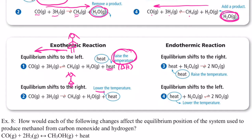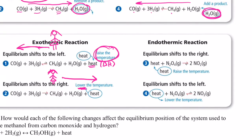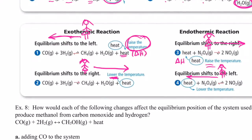To shift an exothermic reaction to the right, we lower the temperature. When it's cold, the little girl shifts towards the heat — so lowering temperature on an exothermic reaction shifts it right. For endothermic reactions, heat is on the reactant side. If we raise the temperature, she moves away from the heat and goes right. If we lower the temperature on an endothermic reaction, she moves towards the heat and shifts left.